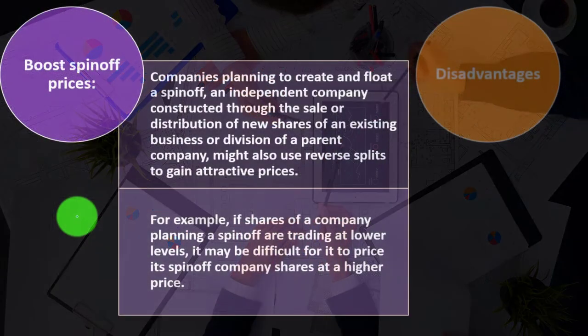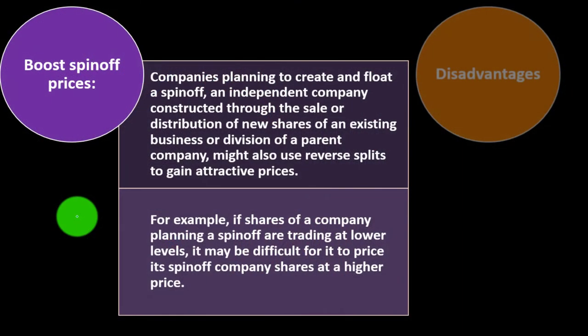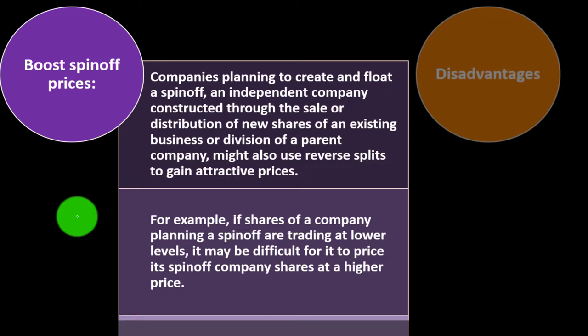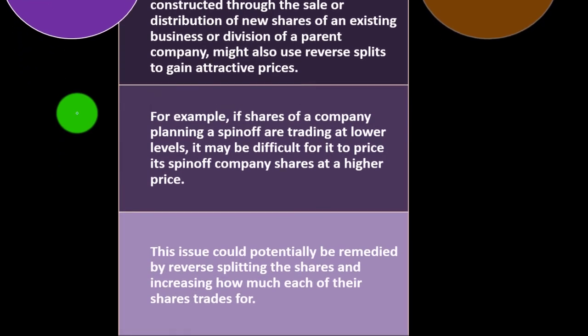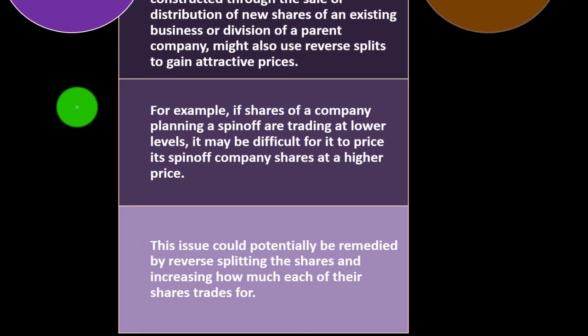For example, if shares of a company planning a spinoff are trading at lower levels, it may be difficult to price the spinoff company shares at a higher price. This issue could potentially be remedied by reverse splitting the shares and increasing how much each share trades for.